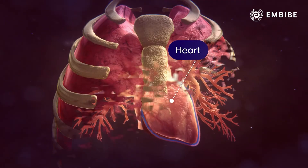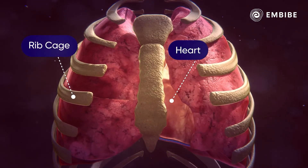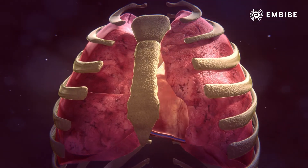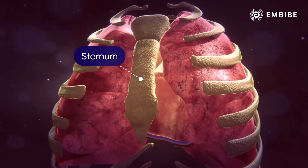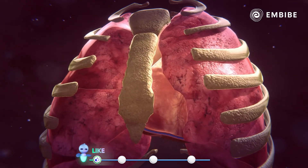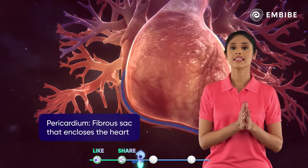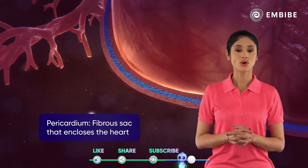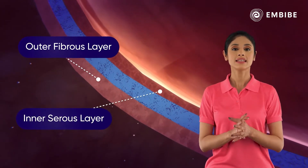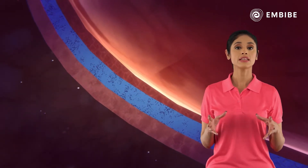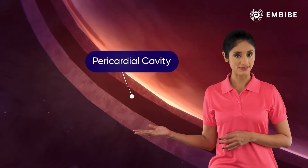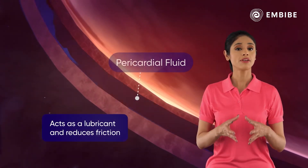The heart is located inside the rib cage and situated behind the sternum, between the lungs. It remains enclosed in a double-walled sac called the pericardium. It has an outer fibrous layer and an inner serous layer. Between these two layers is a very narrow space called the pericardial cavity, which is filled with pericardial fluid.